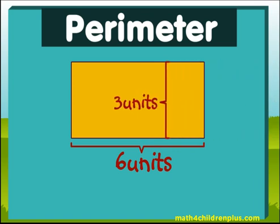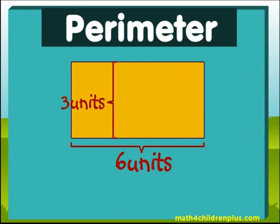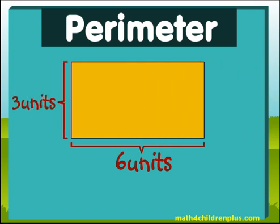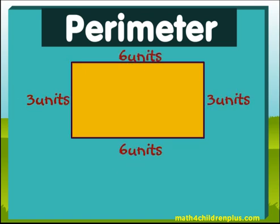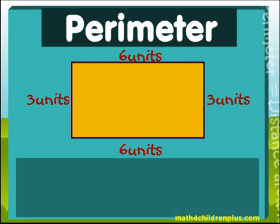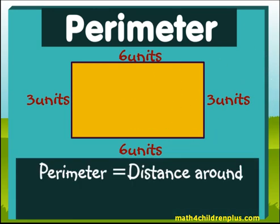this shape has six, and three, and three unit sides. When you add all of those together — the distance around, in other words — you get the parameter.